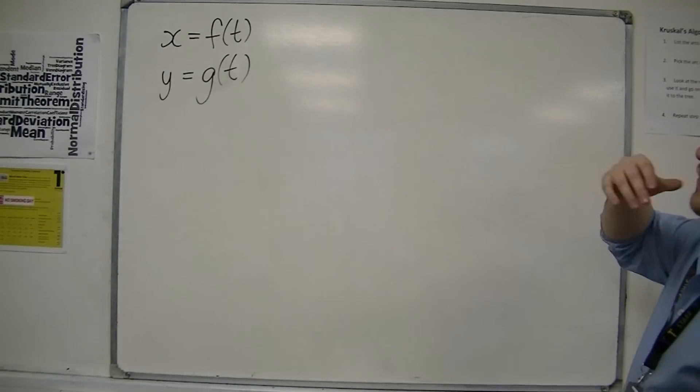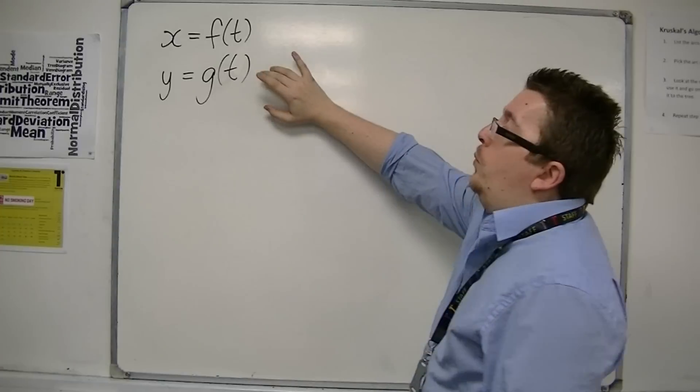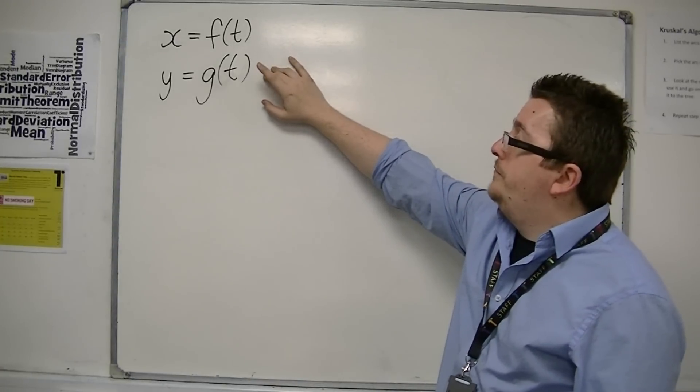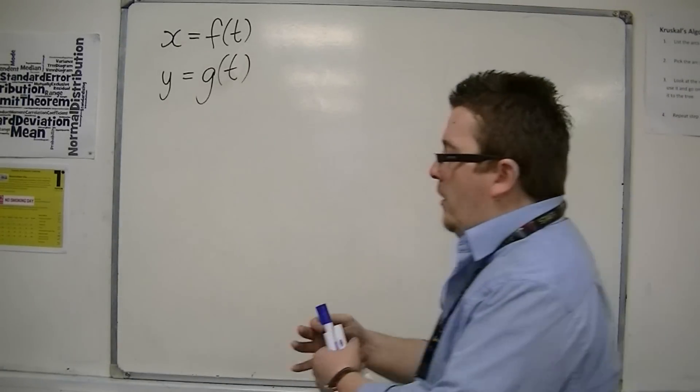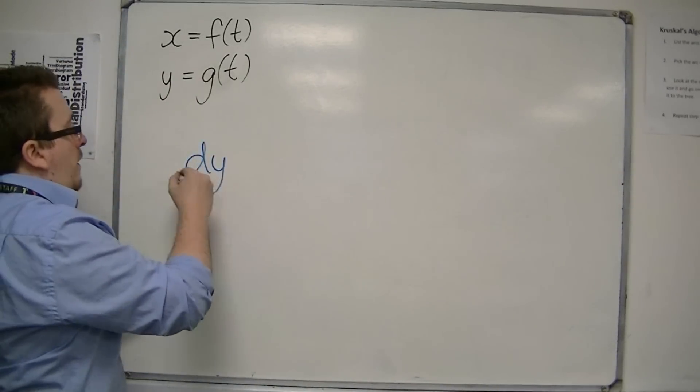And if I start off with two functions, so x is a function of t, and y is a function of t, then there is a way of getting to dy by dx, because that's what I want.